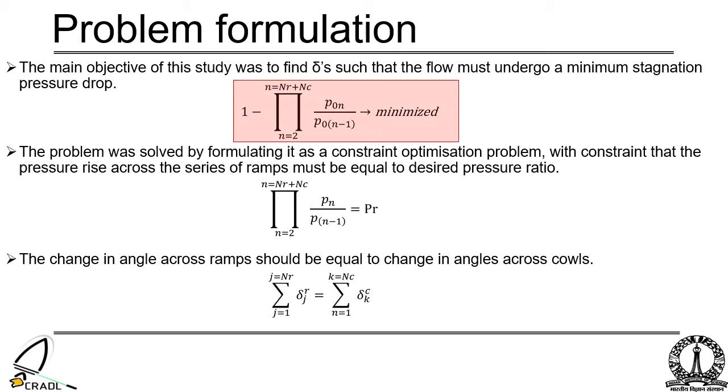The main objective of the study was to find deflection angles such that the flow must undergo minimum stagnation pressure loss. The problem was solved by formulating it as a constraint optimization problem with the constraint that the pressure rise across the series of shocks must be equal to the desired compression ratio. It is also required that the flow must enter parallel to the internal duct. Therefore, the deflection produced by the ramps must be equal to the deflection produced by the cowl.